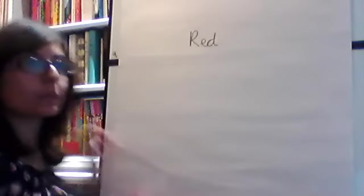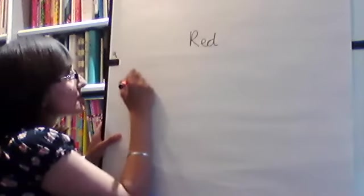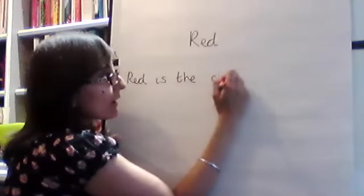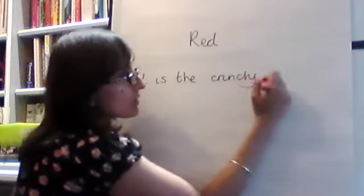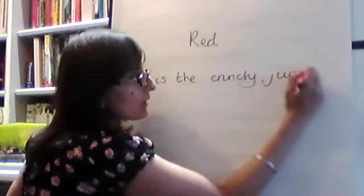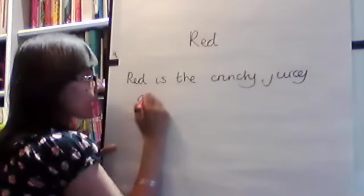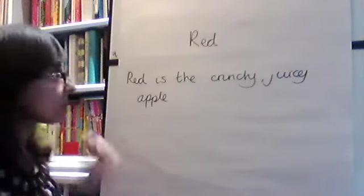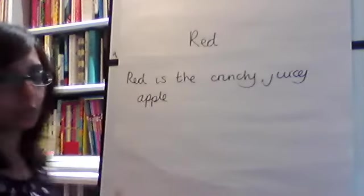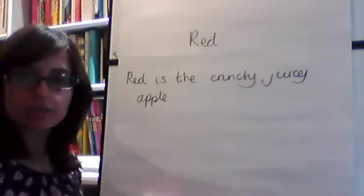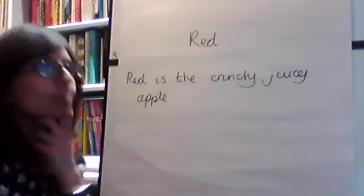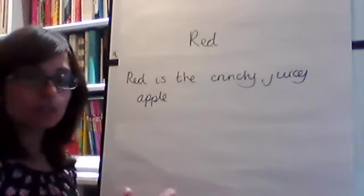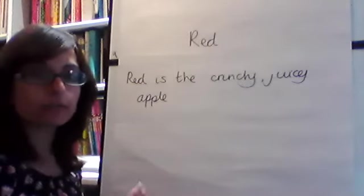Apples are red, so we could say: red is the crunchy juicy apple. If we leave the sentence like this — red is the crunchy juicy apple — that's a bit boring. Where did we get our apple from? We could have picked it from the tree in an orchard. An orchard is where fruit trees grow.